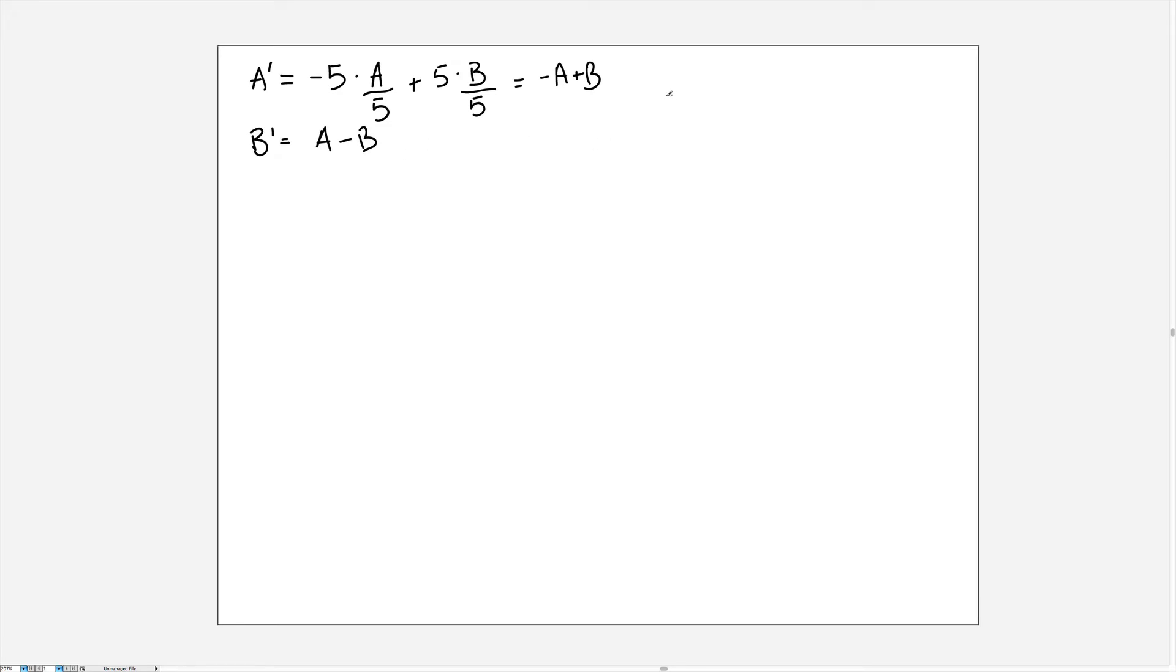So written as a system of equations this would look like (a, b) as a vector prime is equal to the matrix (-1, 1; 1, -1) multiplied by (a, b). Now a number of students added an extra vector here which accounted for the initial condition. That is incorrect. The initial condition is always stated separately and is not part of the equation.